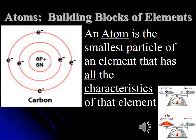An atom is the smallest particle of an element that has all the characteristics of that element. The subatomic particles are the proton, neutron, and electron. Remember that an electron is tiny compared to a proton and neutron. When you take chemistry, you'll learn about more subatomic particles.